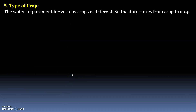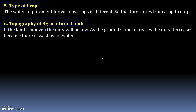Type of crop: the water requirement for various crops is different, so duty varies from crop to crop. Topography of agricultural land: if the land is uneven, the duty will be low. As ground slope increases, duty decreases due to wastage of water.